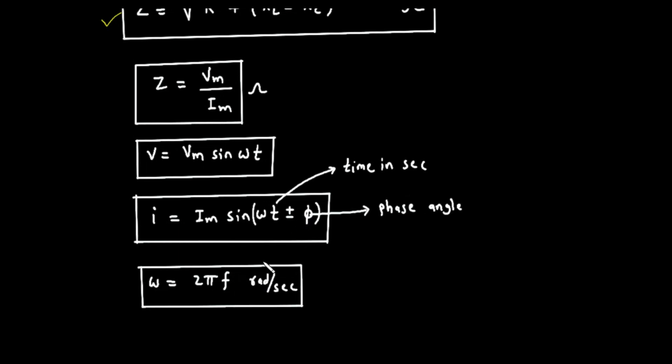Omega equals 2 times pi times F. This final formula shows the relationship between angular frequency, omega, measured in radians per second, and the standard frequency, F, measured in hertz.